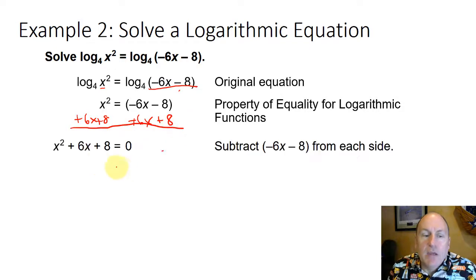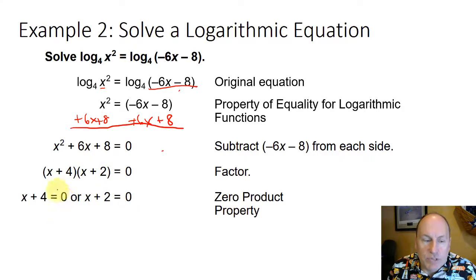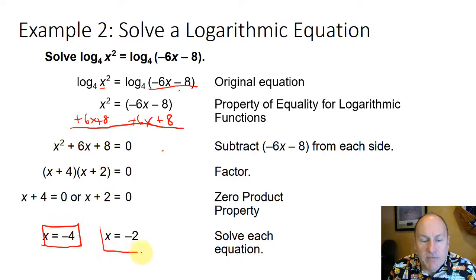We wind up with a quadratic: x squared plus 6x plus 8 equals 0. And we can factor that quadratic. If you'll recall from previous lessons, we're looking for numbers that multiply to give me 8 and add to give me 6. That would be x plus 4 times x plus 2. Therefore, the solutions using the zero product property are x plus 4 equals 0 and x plus 2 equals 0, which leads us to x equals negative 4 and x equals negative 2. If you input those both into the original logarithmic equation, you would find that both of those are true.